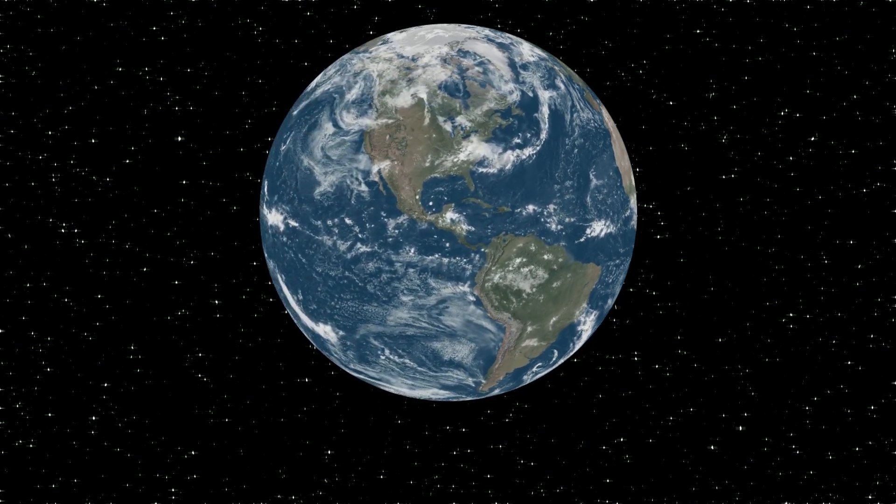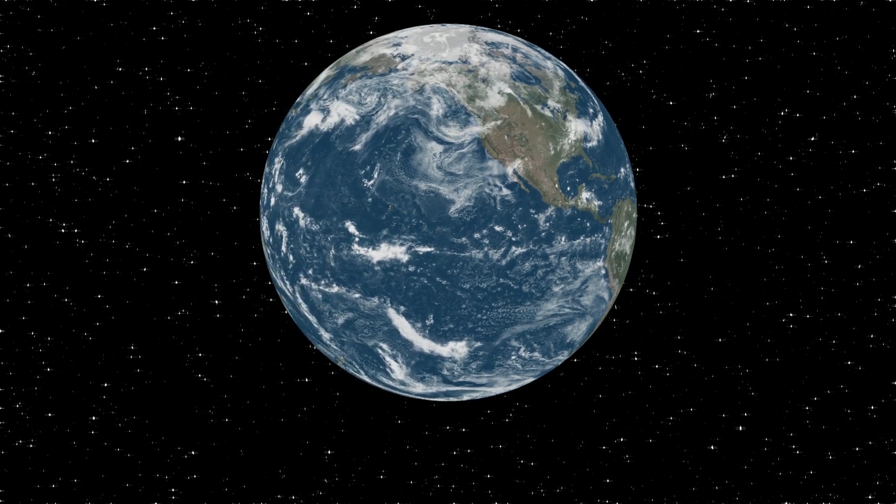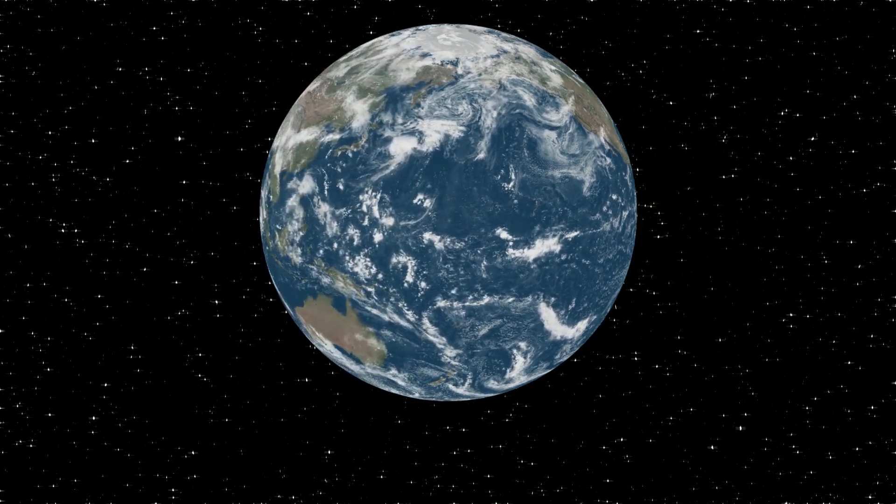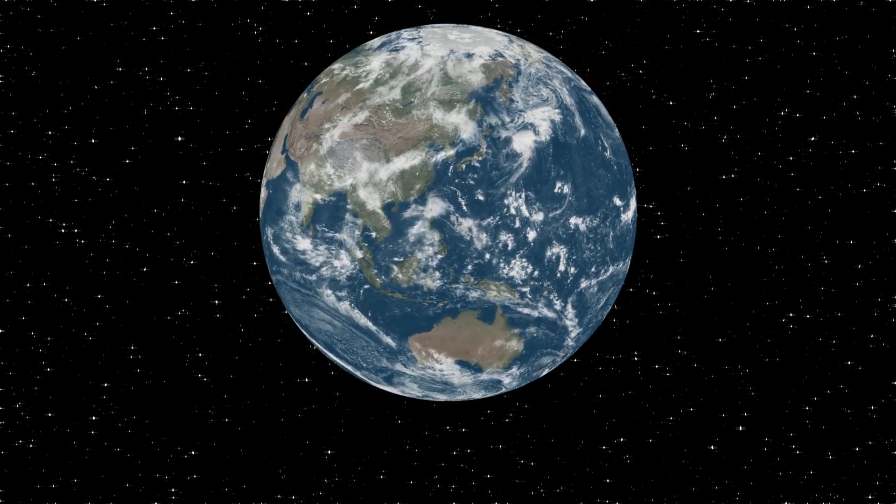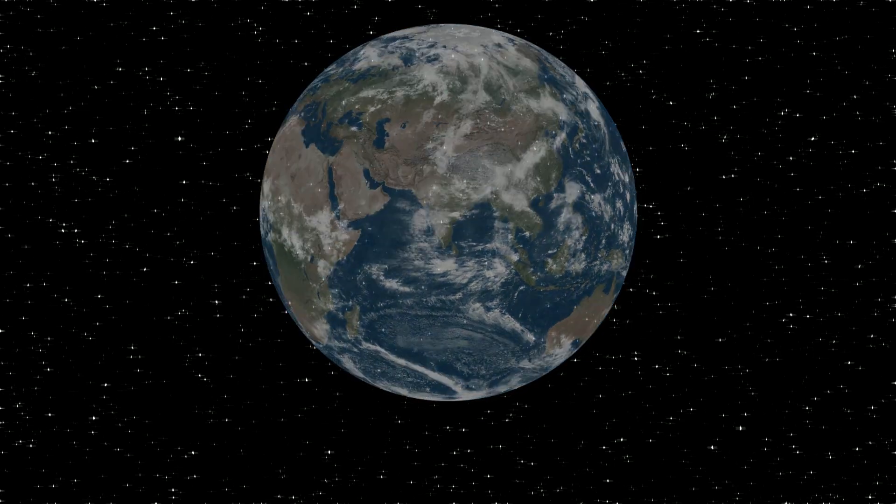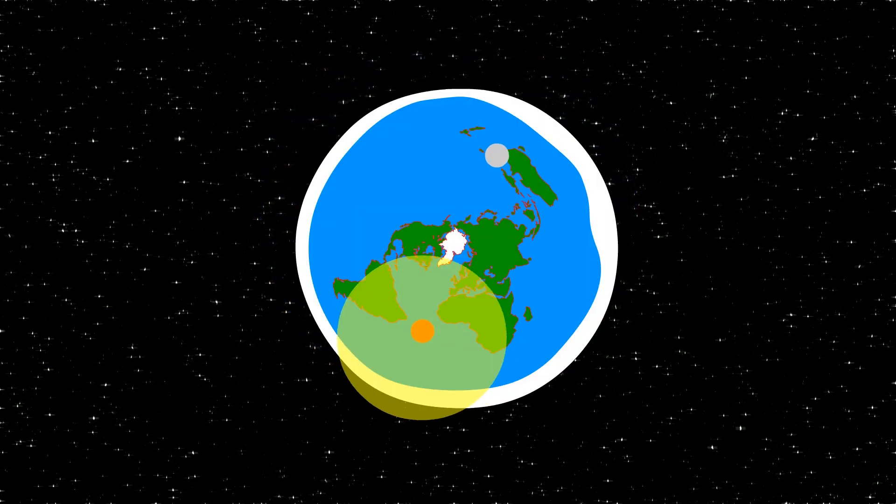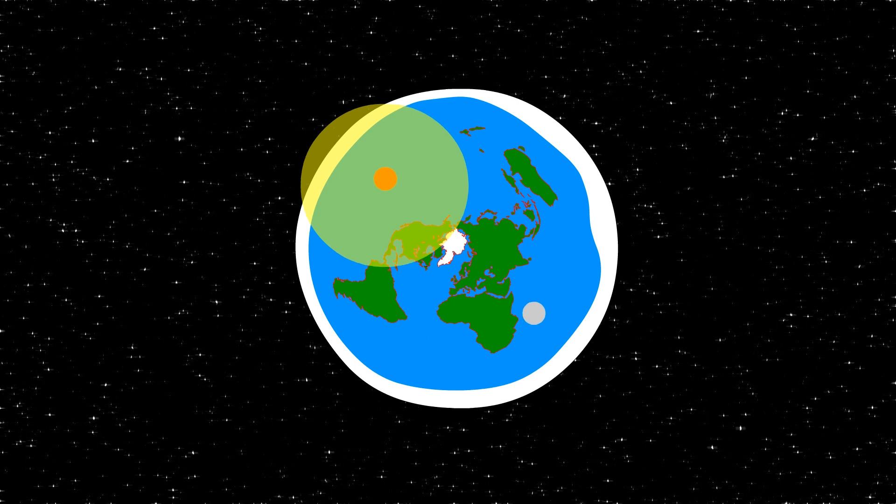Instead of trying to prove the Earth is round, let's investigate and test the flat Earth model and see if it accounts for the mundane occurrences we've grown accustomed to. Flat Earthers believe the Earth to be a disk, with the Sun and Moon revolving around it as illustrated in this simple drawing.